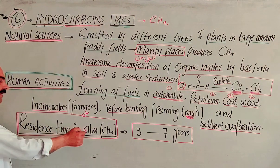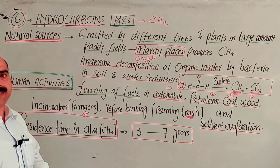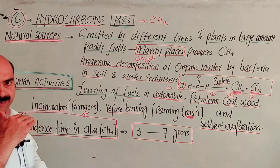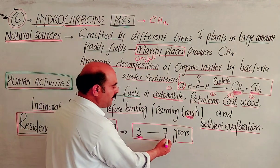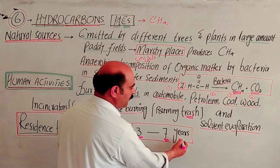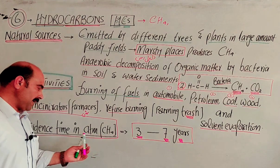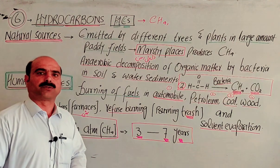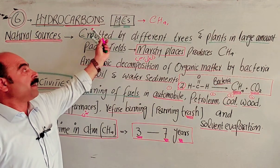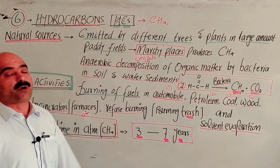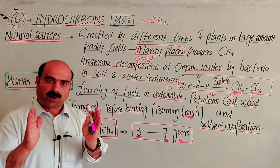The residence time of methane in the atmosphere — meaning the entire time methane persists before it decomposes — is three to seven years. So the residence time, or lifetime, of methane in the atmosphere is three to seven years. So students, these were all about the sixth primary pollutant, which is hydrocarbon. Take a screenshot and thanks a lot for watching the video.